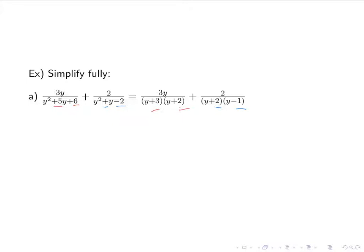And again for our LCD, we have the factors y plus 2 raised to the 1, y minus 1, and y plus 3. So y plus 3 times y plus 2 times y minus 1.